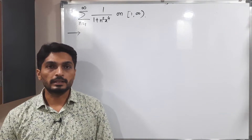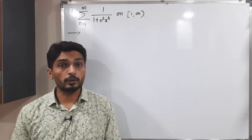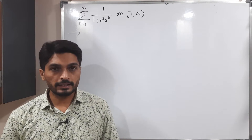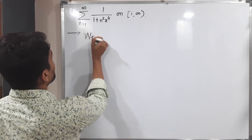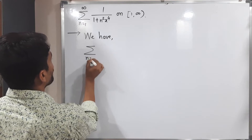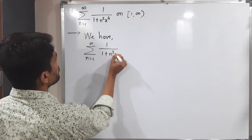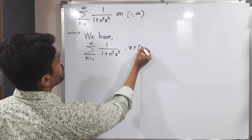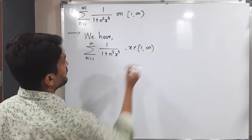Let us discuss this example. We have a series of functions and we are going to prove that it is uniformly convergent. The given series is summation n running from 1 to infinity of 1 upon (1 + n² x⁴), where x belongs to the closed-open interval [1, ∞).